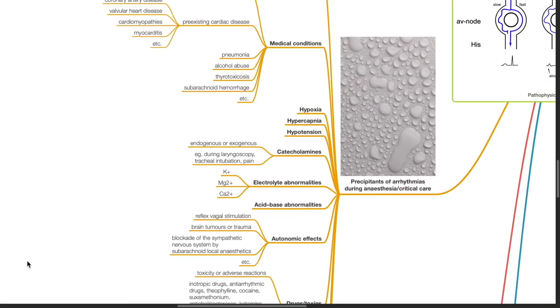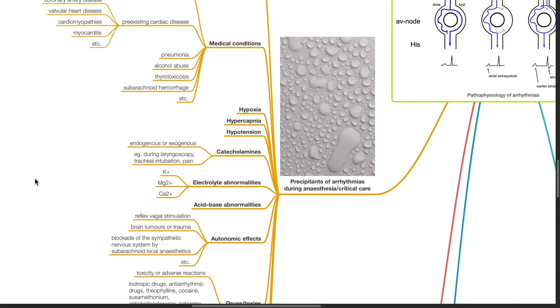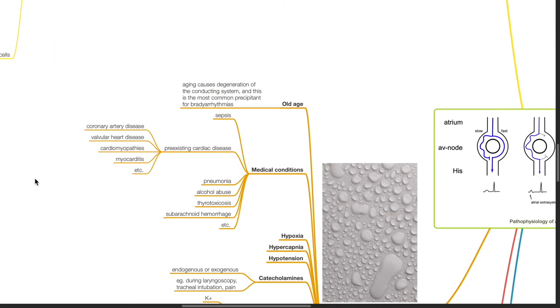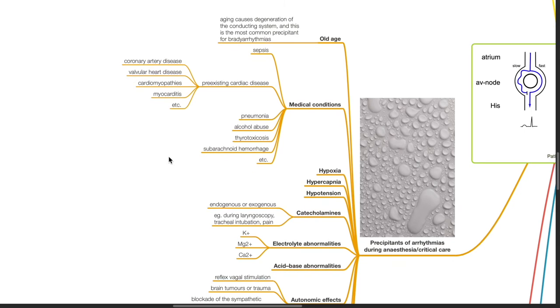Precipitants of arrhythmias during anesthesia or critical care. Old age. Aging causes degeneration of the conduction system and this is the most common precipitant for bradyarrhythmias. Medical conditions such as sepsis, pre-existing cardiac disease such as coronary artery disease, valvular heart disease, cardiomyopathies, myocarditis. Pneumonia, alcohol abuse, thyrotoxicosis, subarachnoid hemorrhage.